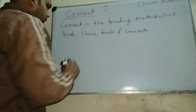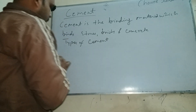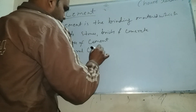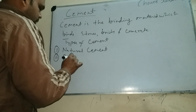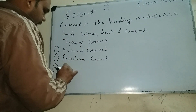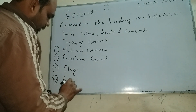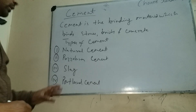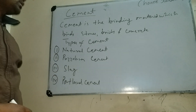Types of cement: mainly cement has four types. First, natural cement. Second, natural cement. Third, slag cement. And fourth, the most important — Portland cement. Portland cement is the modern age cement. Nowadays, only Portland cement is used everywhere.